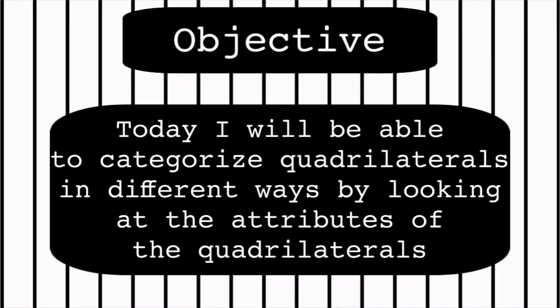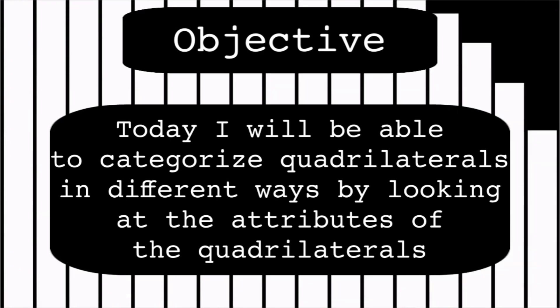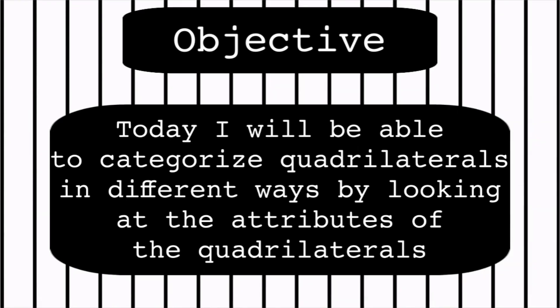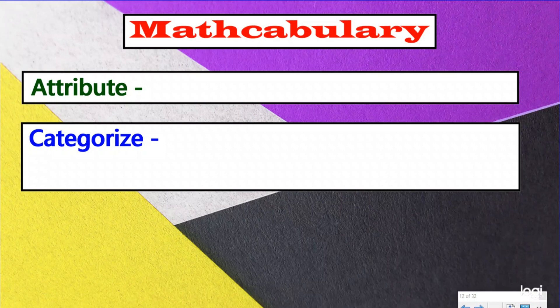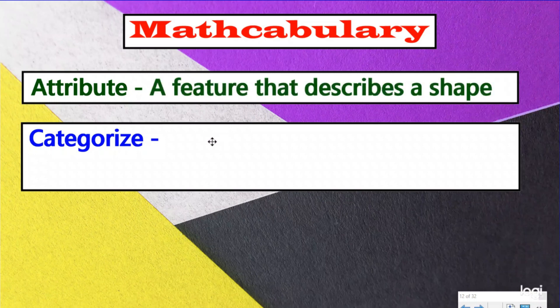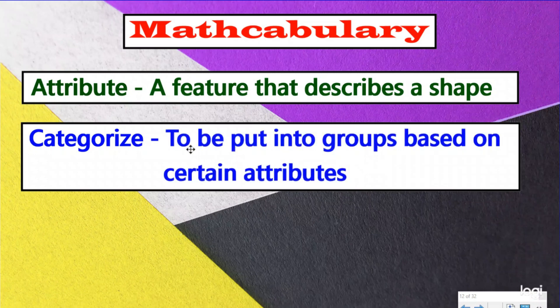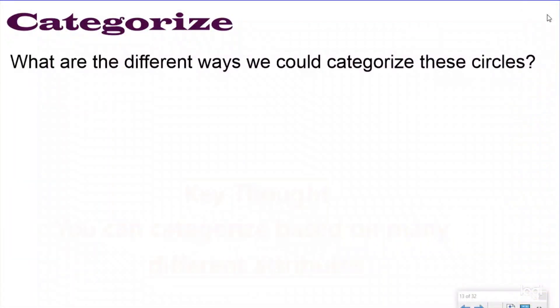We're going to be taking our knowledge from last lesson and going one step further. As always, let's do some math vocabulary. An attribute is a feature that describes a shape. When you categorize something, you're putting shapes into groups based on certain attributes.